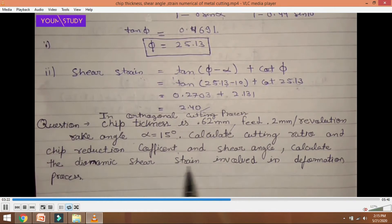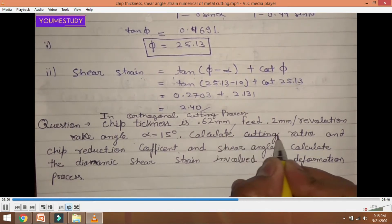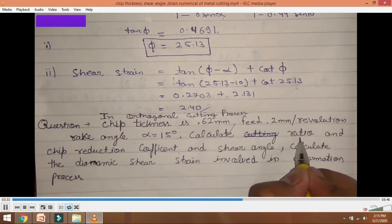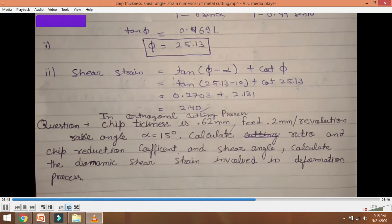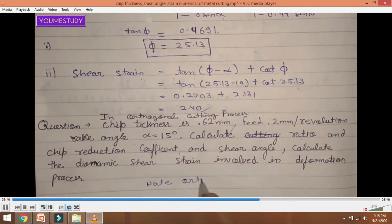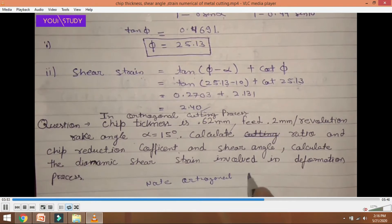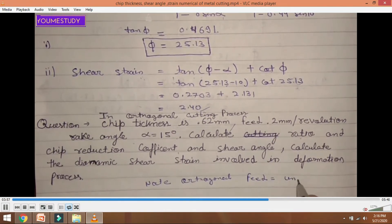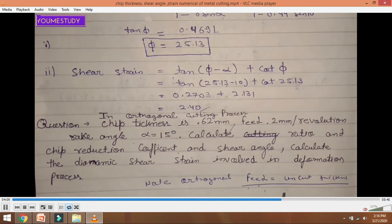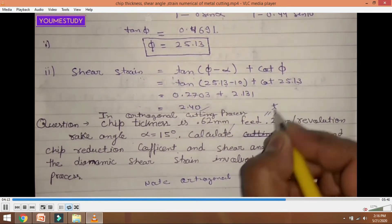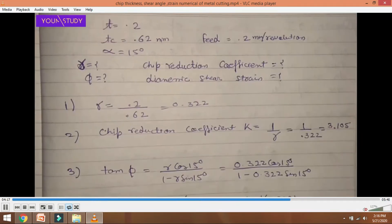The second problem: in orthogonal cutting process, chip thickness Tc = 6.2 mm, feed = 2 mm per revolution, rack angle alpha = 15 degrees. Calculate the chip thickness ratio, chip reduction coefficient, shear angle, and determine the shear strain involved in the process.